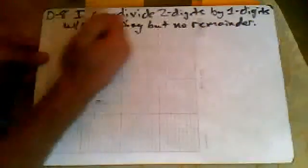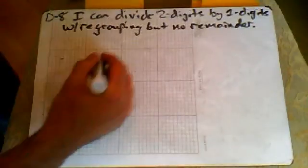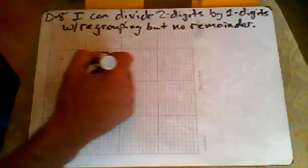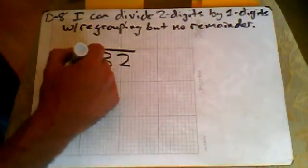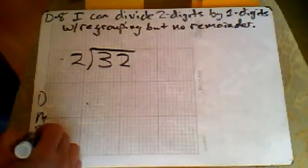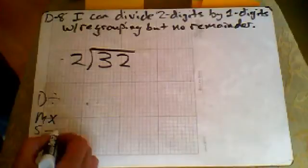All right. Let's go ahead and jump into that second problem on your page there. So we have 32 divided by two. So we know that we have dirty monkeys smell bad and that's divide, multiply, subtract and bring down.